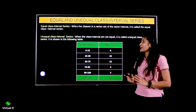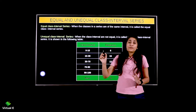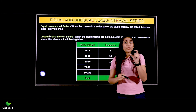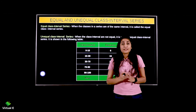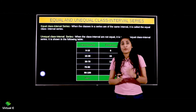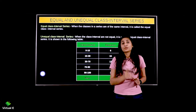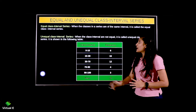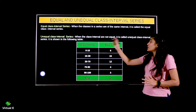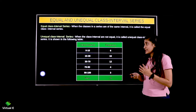Unequal mein kya hota hai? For example, 0 to 5, 5 to 15, 15 to 30 — the difference between upper limit and lower limit is unequal in all classes. We call it the unequal class interval. When the class intervals are not equal, it is called the unequal class interval series.